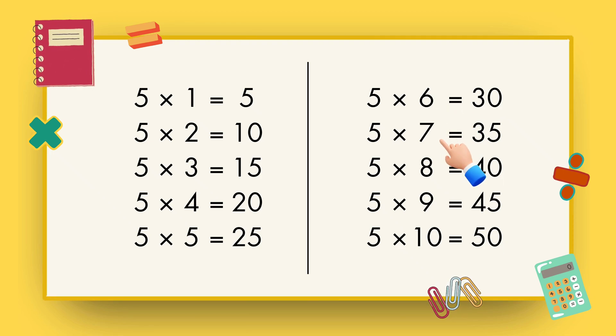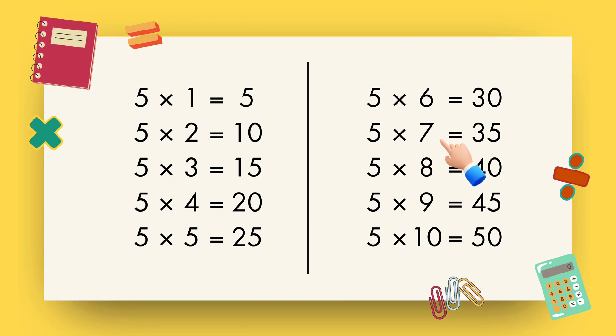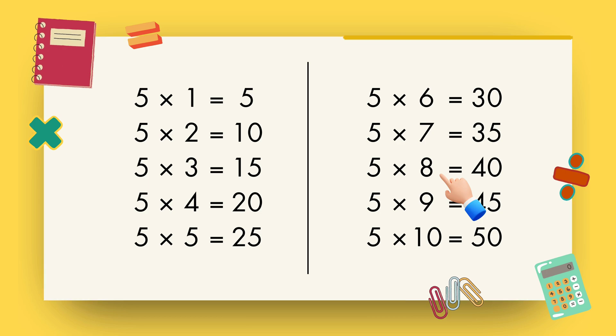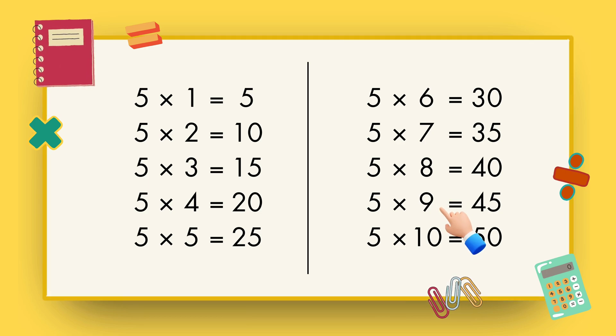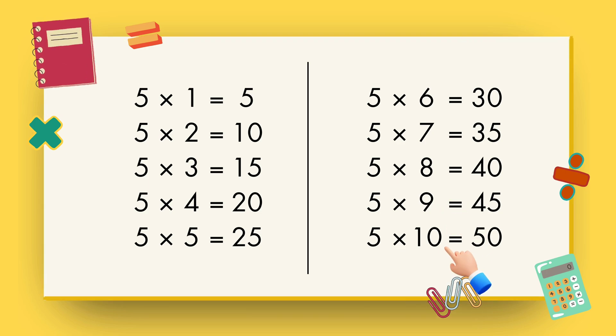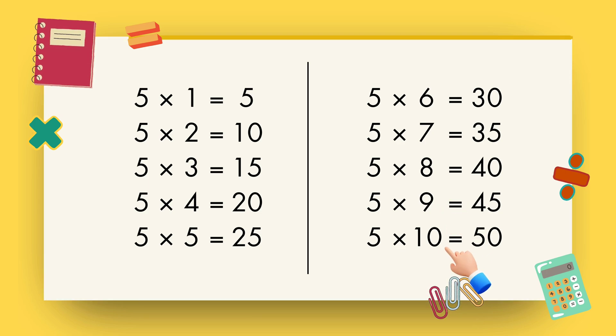5 7s are 35, 5 8s are 40, 5 9s are 45, 5 10s are 50.